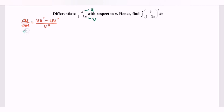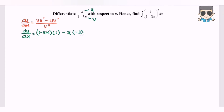So dy/dx will be equal to v, where we have 1 minus 3x multiplied by u prime, minus u multiplied by v prime, which gives negative 3, all over 1 minus 3x to the power of 2.